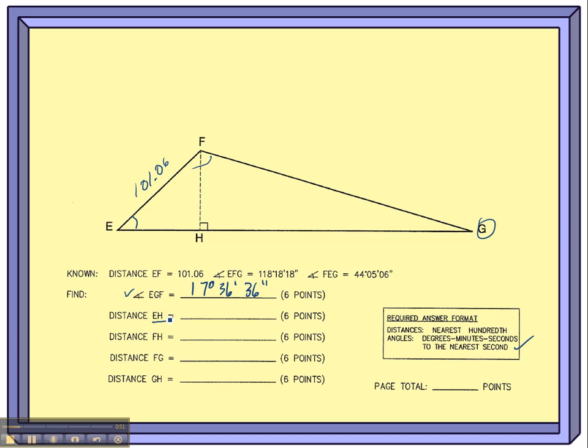Okay, next distance is EH. I'm going to call that X. I have a right triangle over here on the left-hand side. This is the hypotenuse, and this is the adjacent side. I'm going to use cosine. Cosine of angle E is equal to my adjacent side X, and the hypotenuse is 101.06.